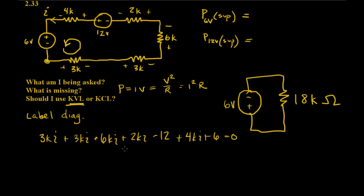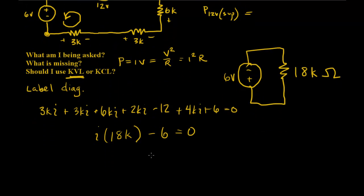And I could then combine all of the values with i together and pull the i out, and I would end up with 18k. And then this would be negative 6. So I can see how I have the same values here for this circuit. But now that we have this form of the equation, we can just use this to simplify. So we get i equals 6 over 18k, which is the same as 1 third of a milliamp once we reduce that.